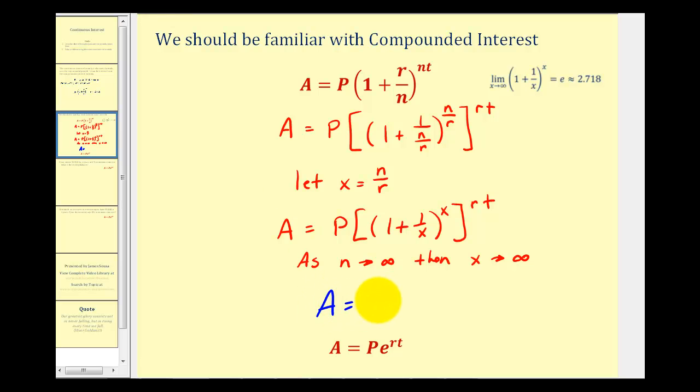We would have A equals P, all of this is equal to e as x approaches infinity, so we have just e raised to the power of r times t, which is our continuous interest formula. Now that we know where this formula comes from, let's take a look at a couple of examples.